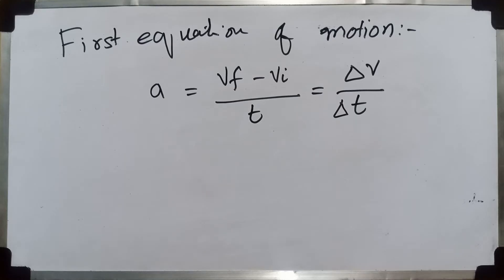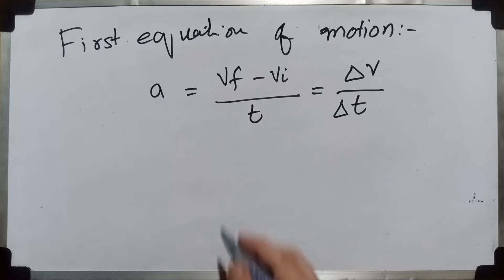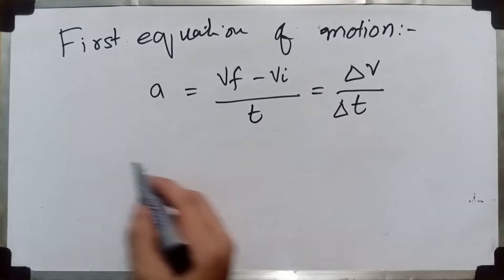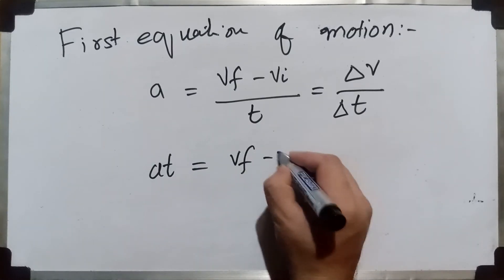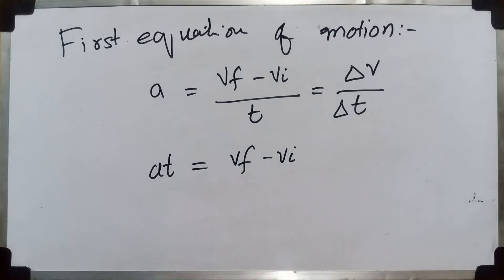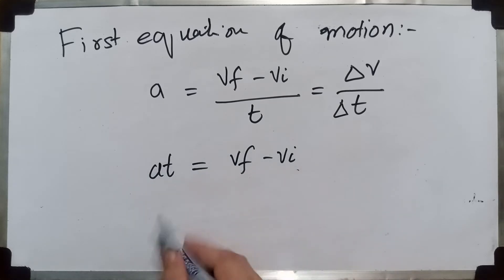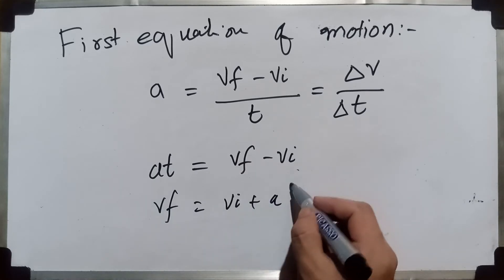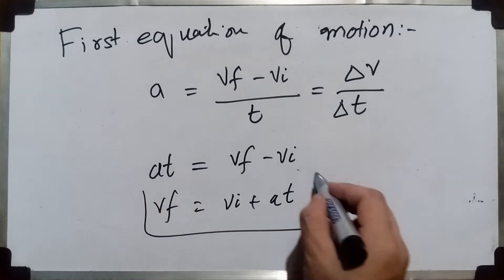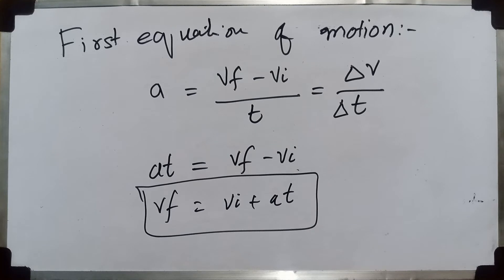Using this formula, acceleration equals the difference between final and initial velocity divided by time. We can move T to the left-hand side, where it multiplies with acceleration. So acceleration times time equals final velocity minus initial velocity. Moving initial velocity to the other side, we get: final velocity equals initial velocity plus acceleration times time.